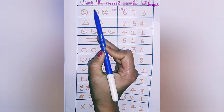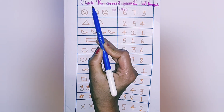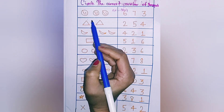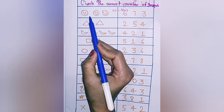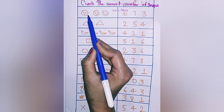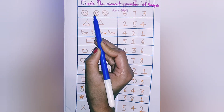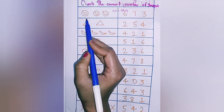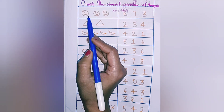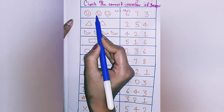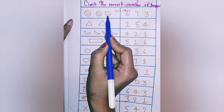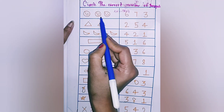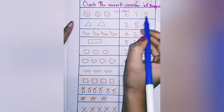Hello kid, hope you are doing great today. Today we are doing circle the correct number of image. How many smiley is there? There are three smiley — one, two, three. How many smiley is there? Three. Now circle the three.